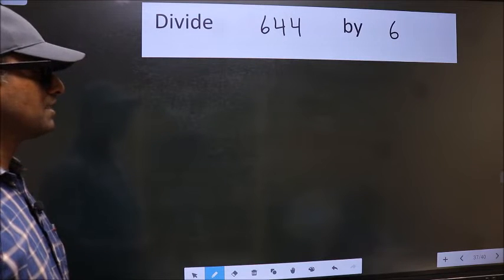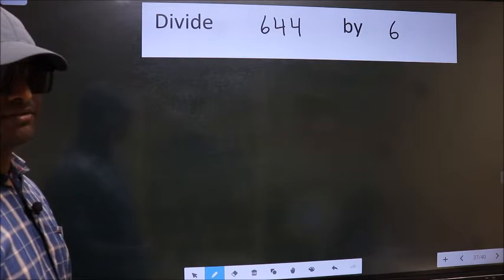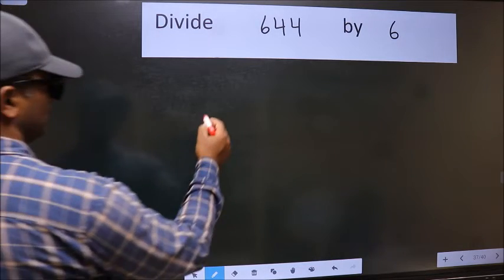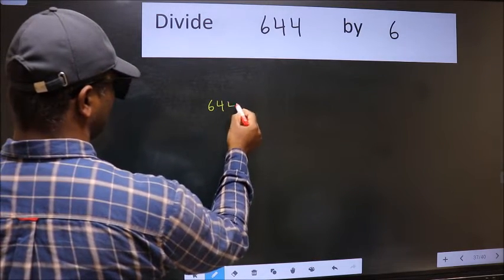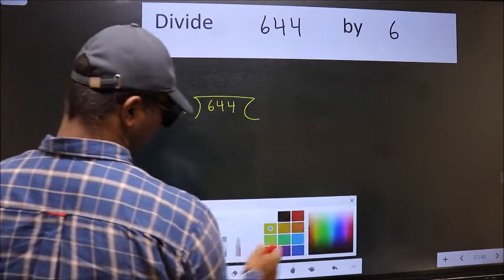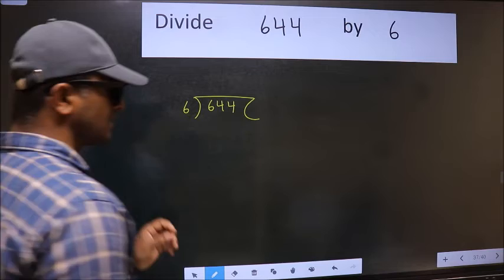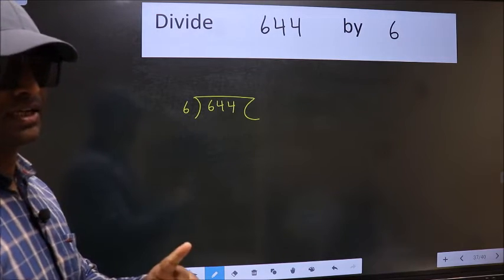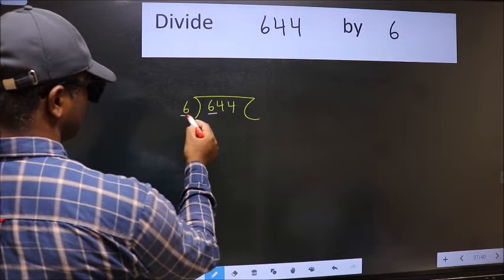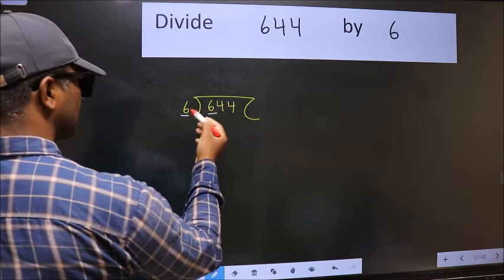Divide 644 by 6. To do this division, we should frame it in this way: 644 here and 6 here. This is step 1. Next, here we have 6 and 6 here. When do we get 6 in the 6 table? 6 once 6.